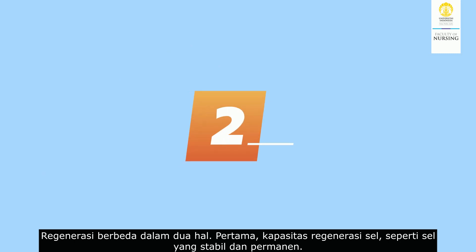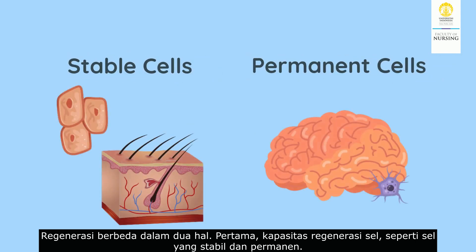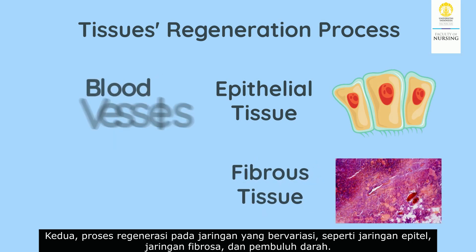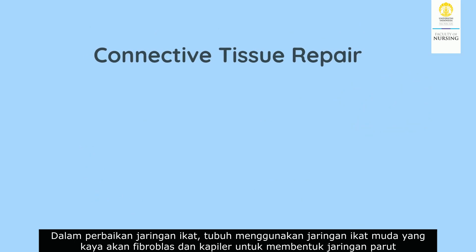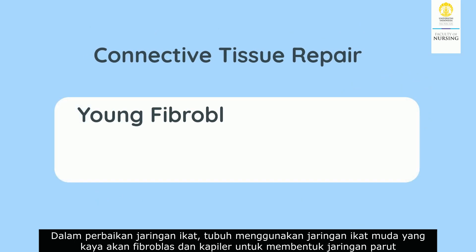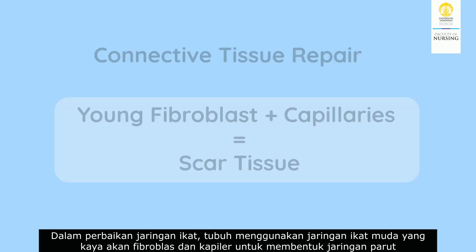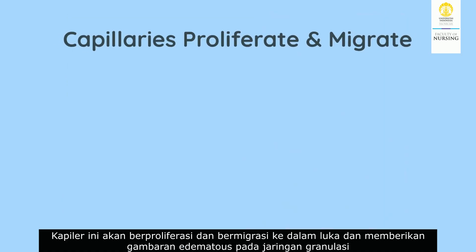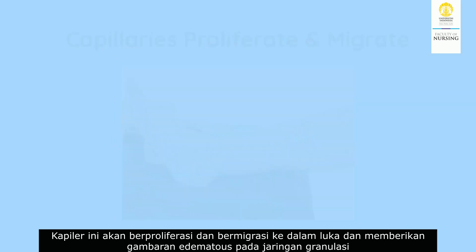Regeneration differs in two matters: first, the capacity of cell regeneration, such as in stable and permanent cells; and second, the process of regeneration in various tissues such as epithelial tissue, fibrous tissue, and blood vessels. In connective tissue repair, the body uses young connective tissue rich in young fibroblasts and capillaries to form scar tissue. The new capillaries will proliferate and migrate, giving the granulation tissue an edematous appearance, as shown here.